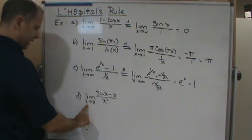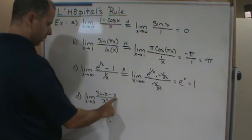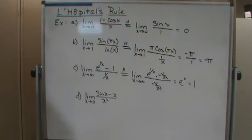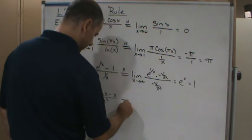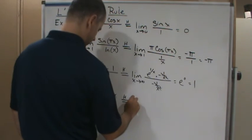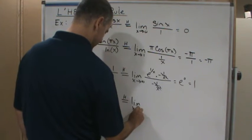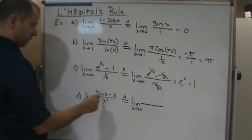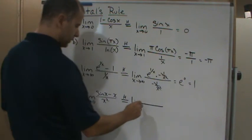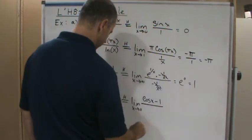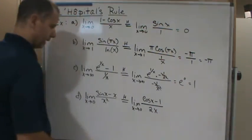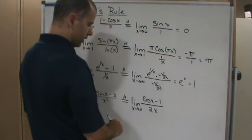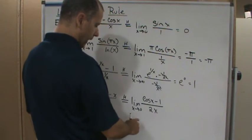What about this one? As x approaches 0, sin(0) is 0, x is 0, so 0 minus 0 is 0, and we get 0 in the denominator — 0 over 0. So we apply L'Hôpital's rule: take the derivative of the top and bottom and take the limit as x approaches 0. The derivative gives us cosine x minus 1 over 2x. As x approaches 0, cosine of 0 is 1, so we get 1 minus 1, which is 0 over 0 again.